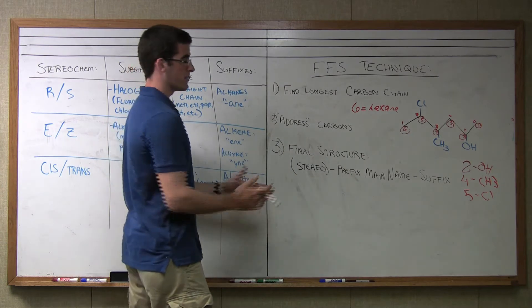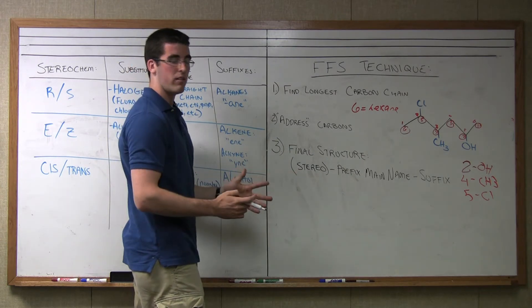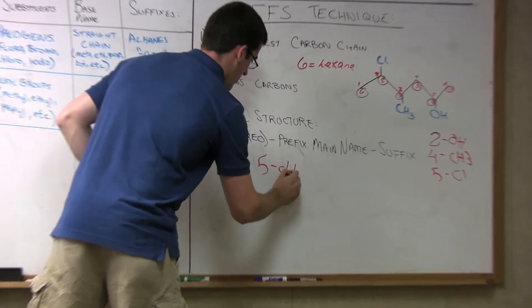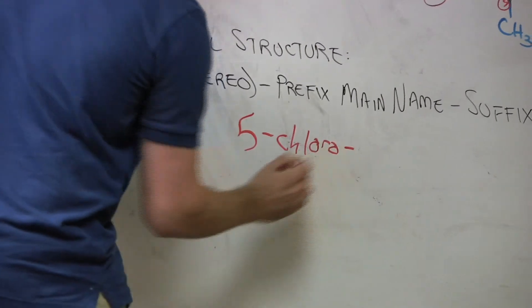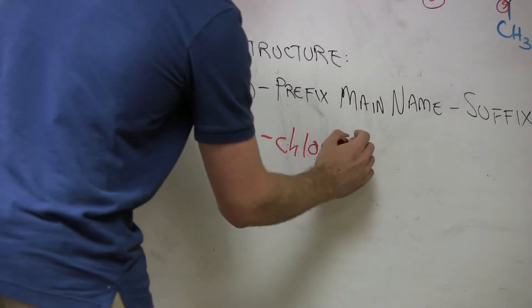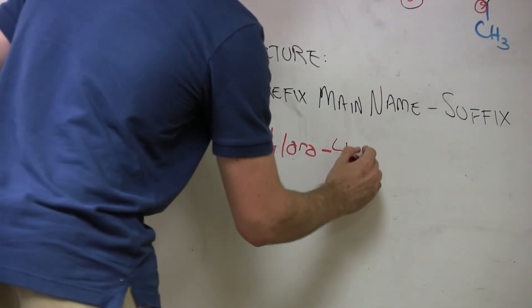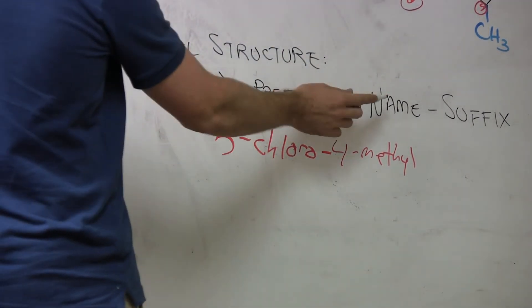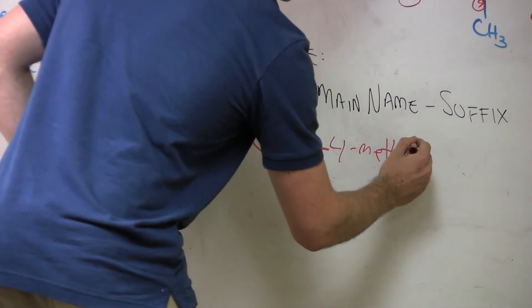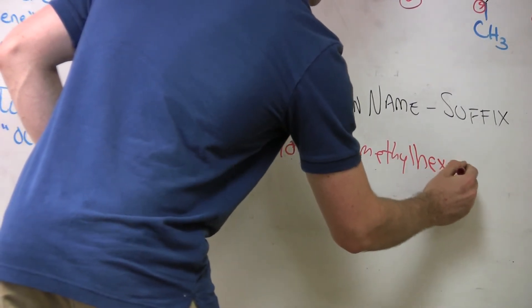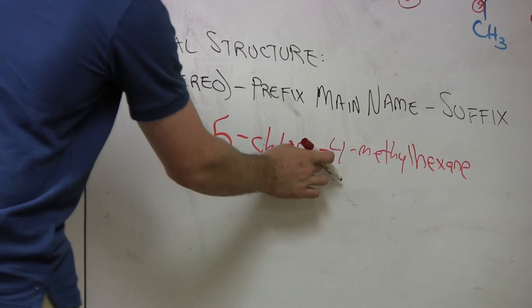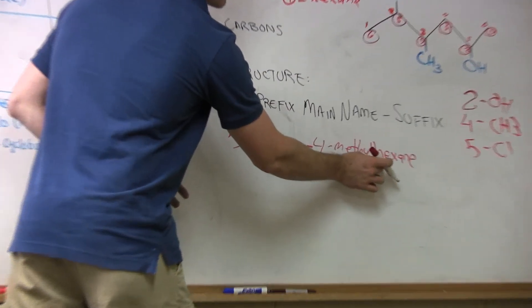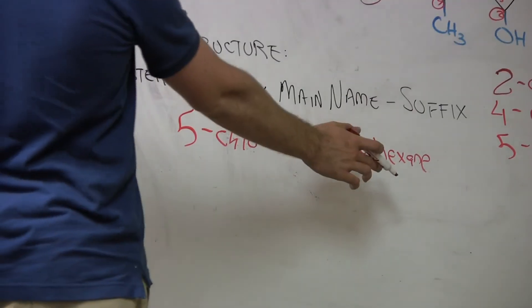Now the correct way to number these is because we have two prefixes, we're going to do it alphabetically. So our first one is going to be five-chloro, and then we go into our next prefix, which is four-methyl. These are our only two prefixes, substituents. Now we go right into our main name, which is the hexane. Now notice here that we have hyphens between letters and numbers. That's an important thing to note. Notice how I don't have it here because it's between two letters.